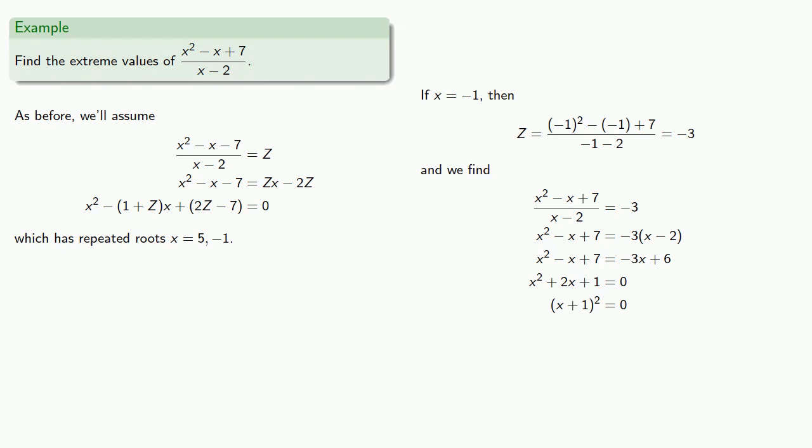Through other means we find that x equals 5 corresponds to a local minimum, and x equals negative 1 to a local maximum.